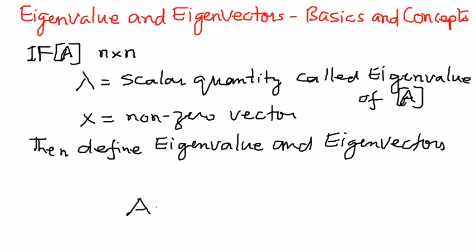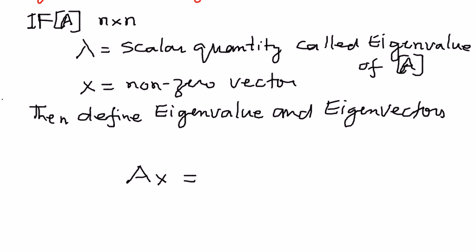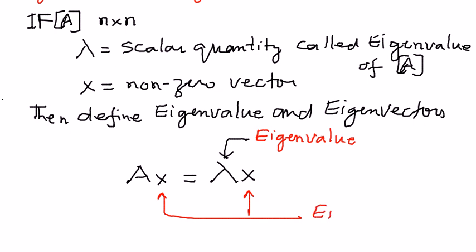A x is equal to lambda x, A x equals lambda x, where lambda here is called the eigenvalue, and x here is called the eigenvector. x here is called the eigenvector.